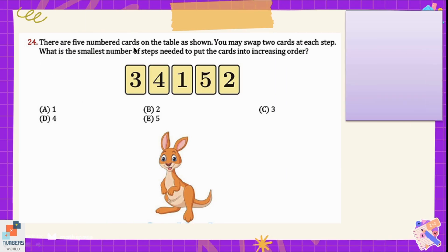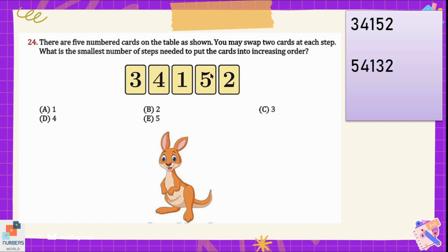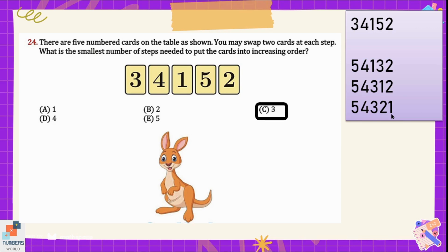Question number 24: there are five numbered cards on the table and you may swap two cards at each step. What is the smallest number of steps needed to put the cards in increasing order? In step 1 we swap five and three, giving the sequence 5, 4, 1, 3, 2. In step 2 we swap three and one, giving 5, 4, 3, 1, 2. In step 3 we swap one and two, giving the final sequence 5, 4, 3, 2, 1. So we need at least 3 steps — option C is the correct option.